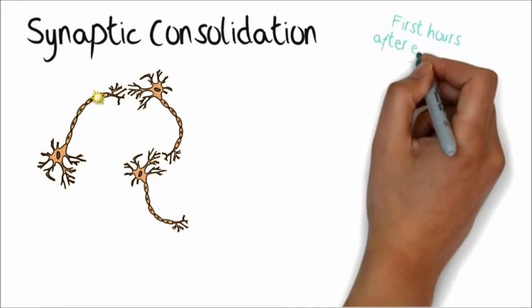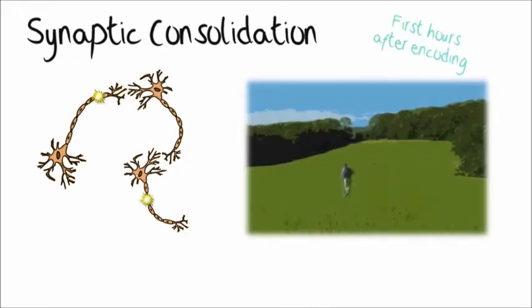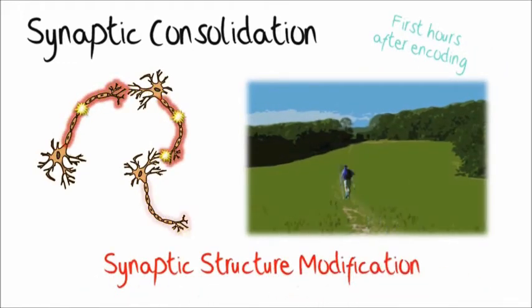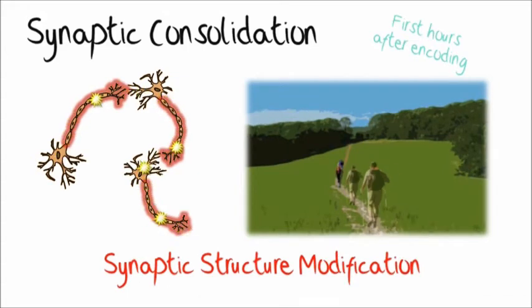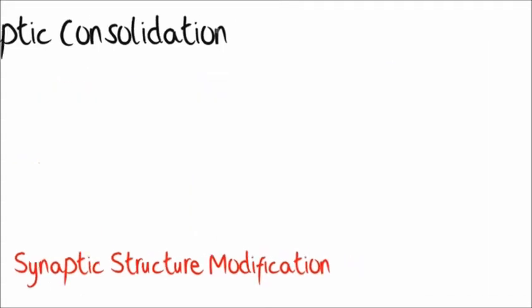In synaptic consolidation, as neuronal pathways are traversed over and over again, their structure is modified, facilitating the neuronal transmission like a path over a field is cleared as trackers pass through it.